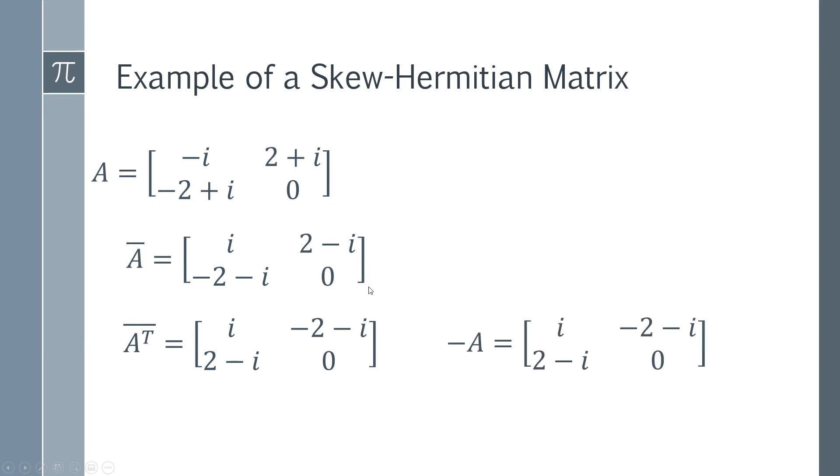We then look at what -A would be by swapping all the signs. You can see these two matrices have the same dimension—both are 2×2, which is the first criterion for matrix equality.